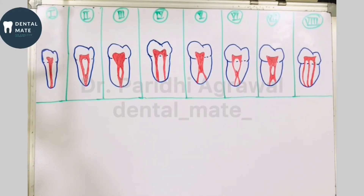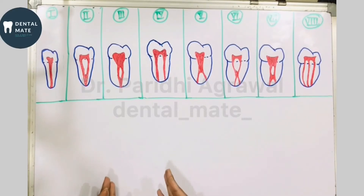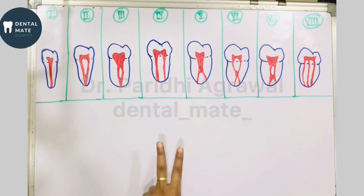First of all let us talk about Vertucci's classification. He has given 8 different types of root canal morphology, in which the first 3 have a single apical foramen, the next 4 have a double apical foramen, and the last one has 3 apical foramen.